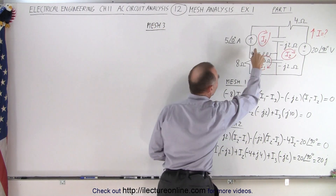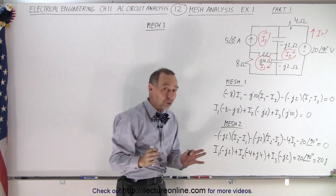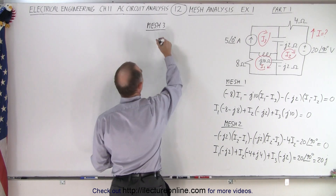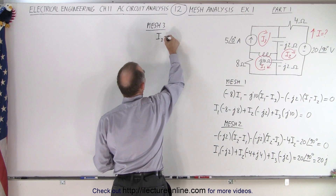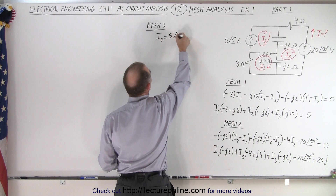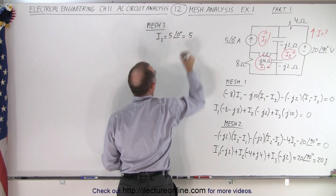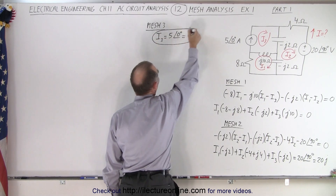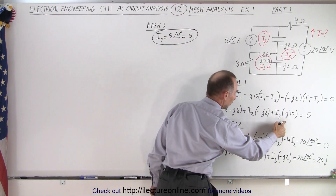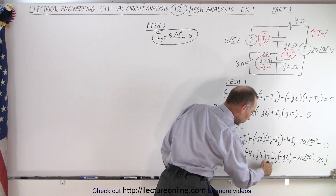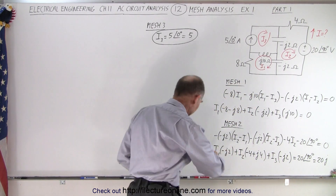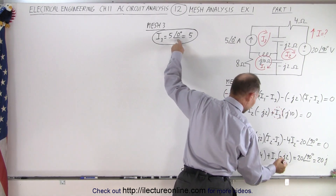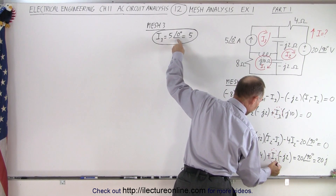In mesh 3, we have a current supply that provides 5 amps of current regardless of what happens in that mesh. So we can simply say that I3 is equal to 5 amps with a 0 degree phase angle, which is simply equal to 5. We can take this information and replace I3 in both our first and second equations.